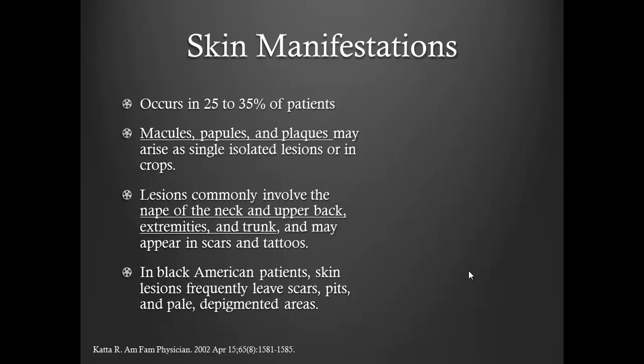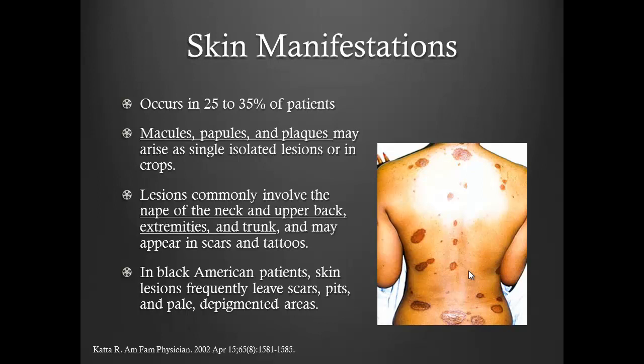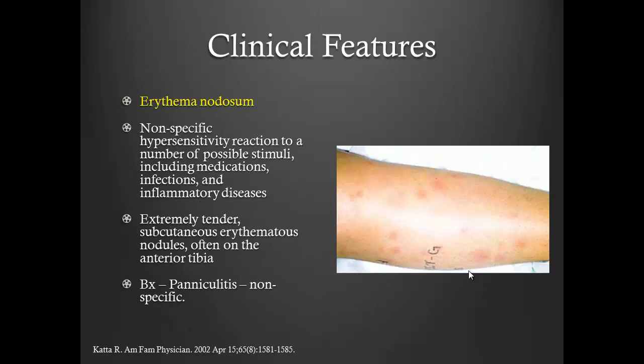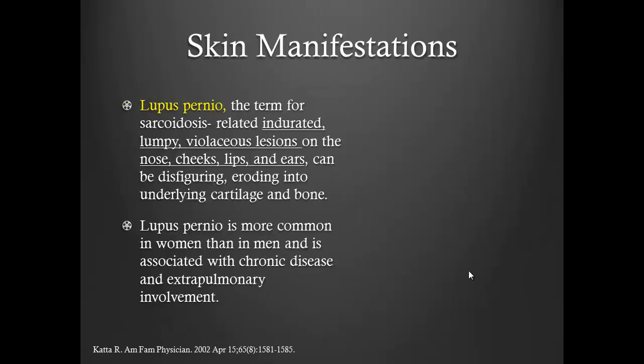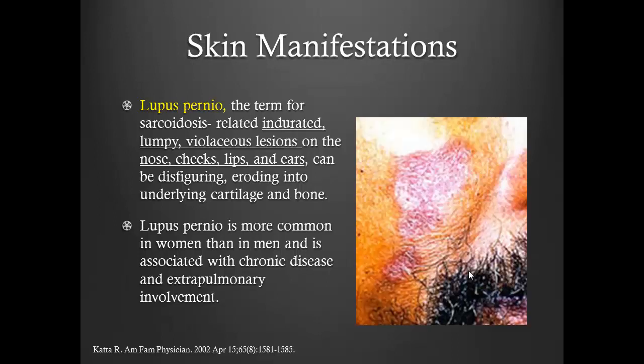For skin manifestations, macules are the most common, but papules and plaques can also be seen, classically on the back of the neck, upper back, trunk, and arms. Erythema nodosum presents as multiple, very tender, very painful spots that resolve within a matter of weeks. Lupus pernio is another skin manifestation involving the head and neck area, purplish in color, and can be very disfiguring. If a patient has lupus pernio, the chances of having a progressive form of sarcoidosis are actually quite high.